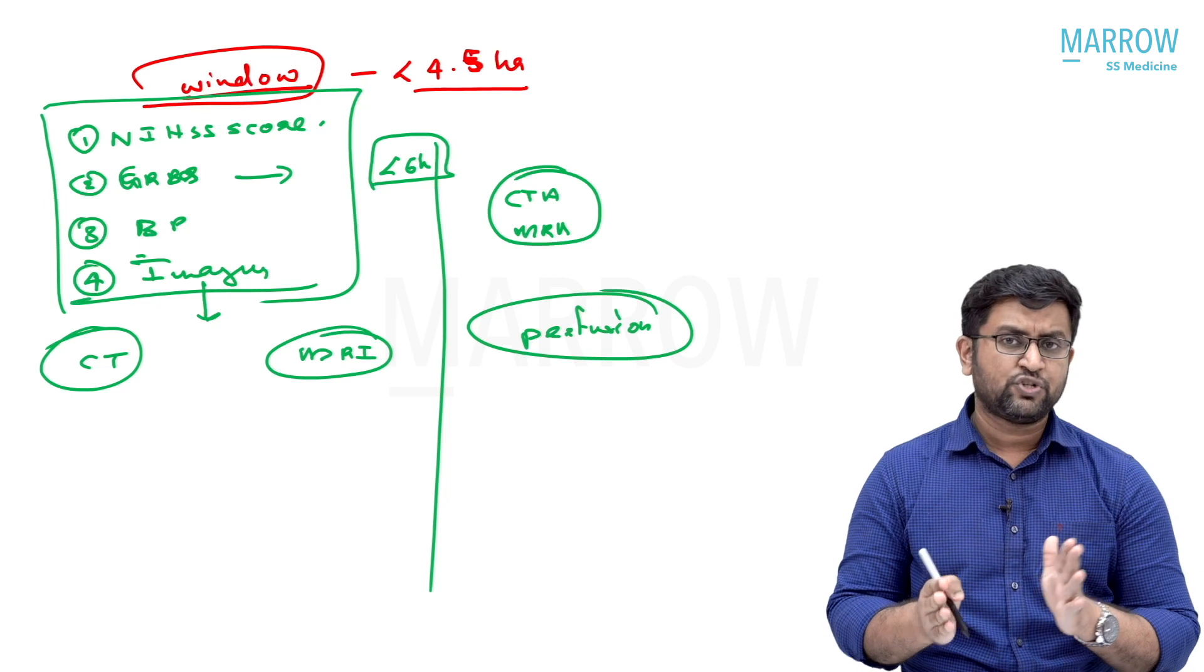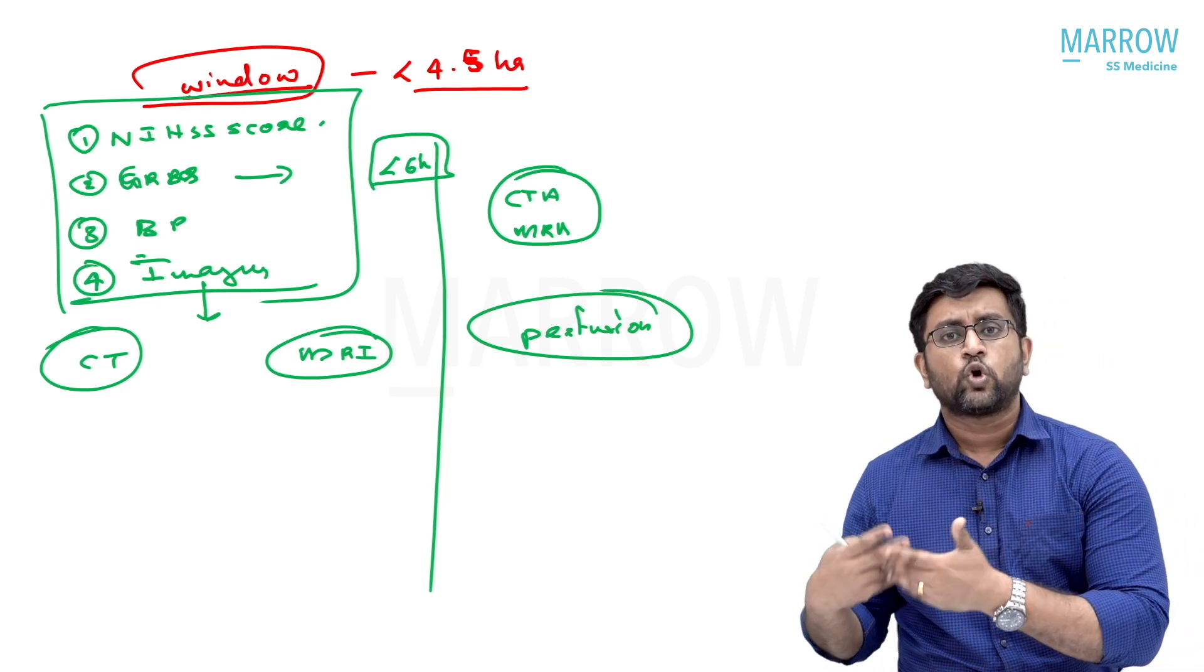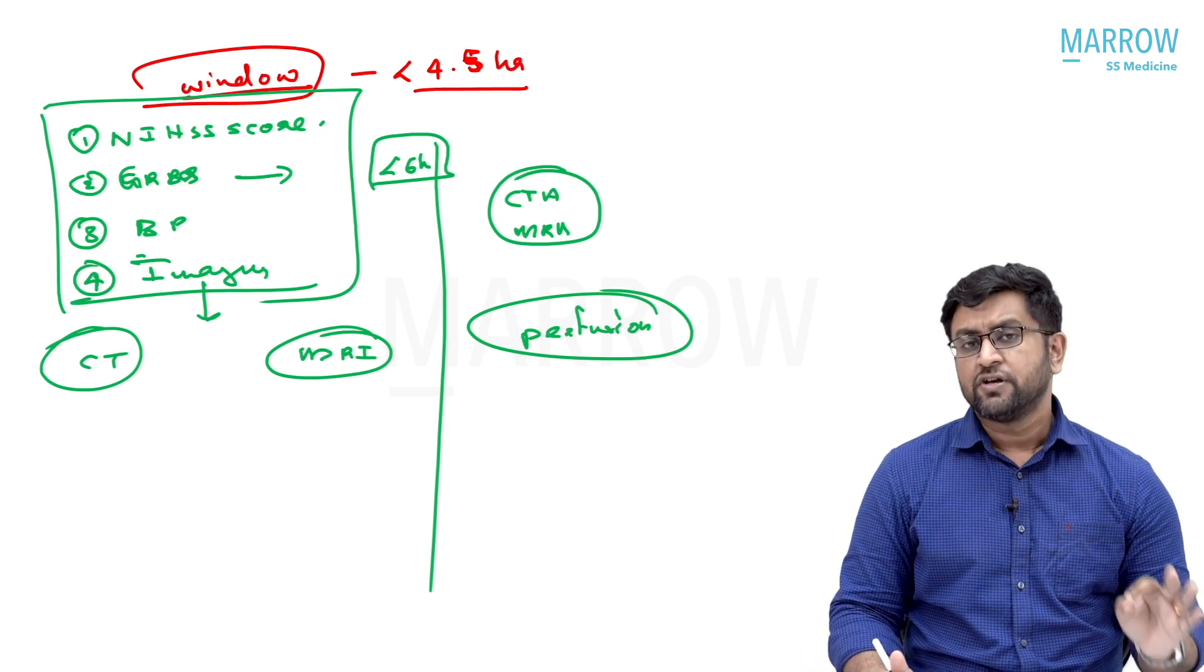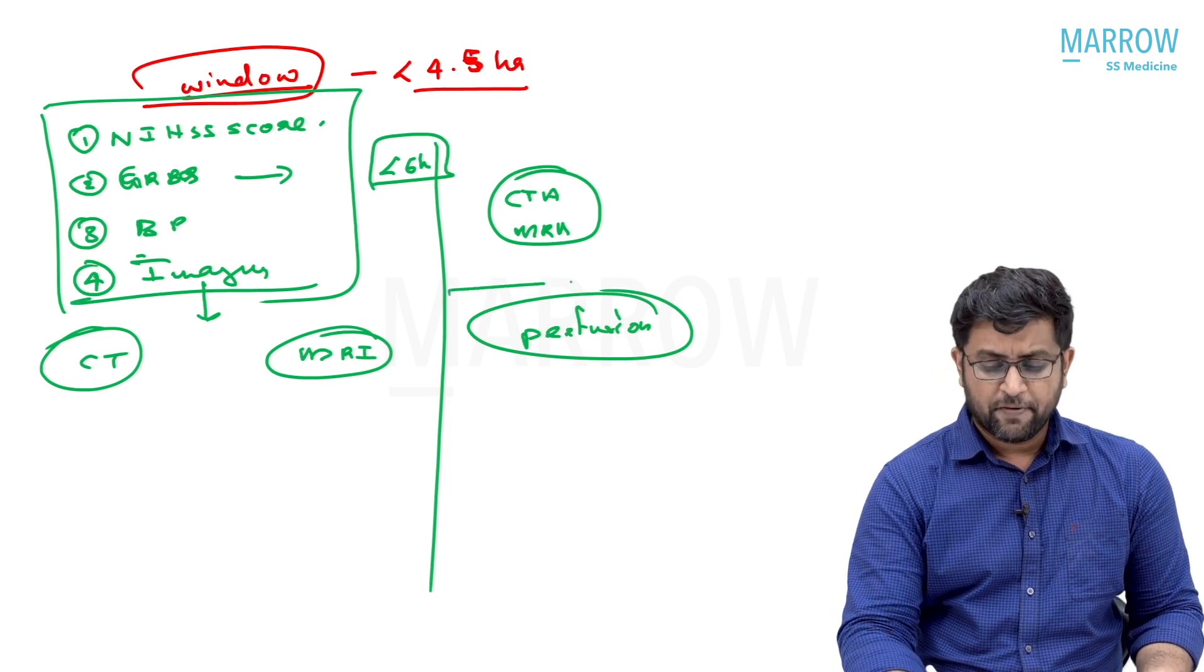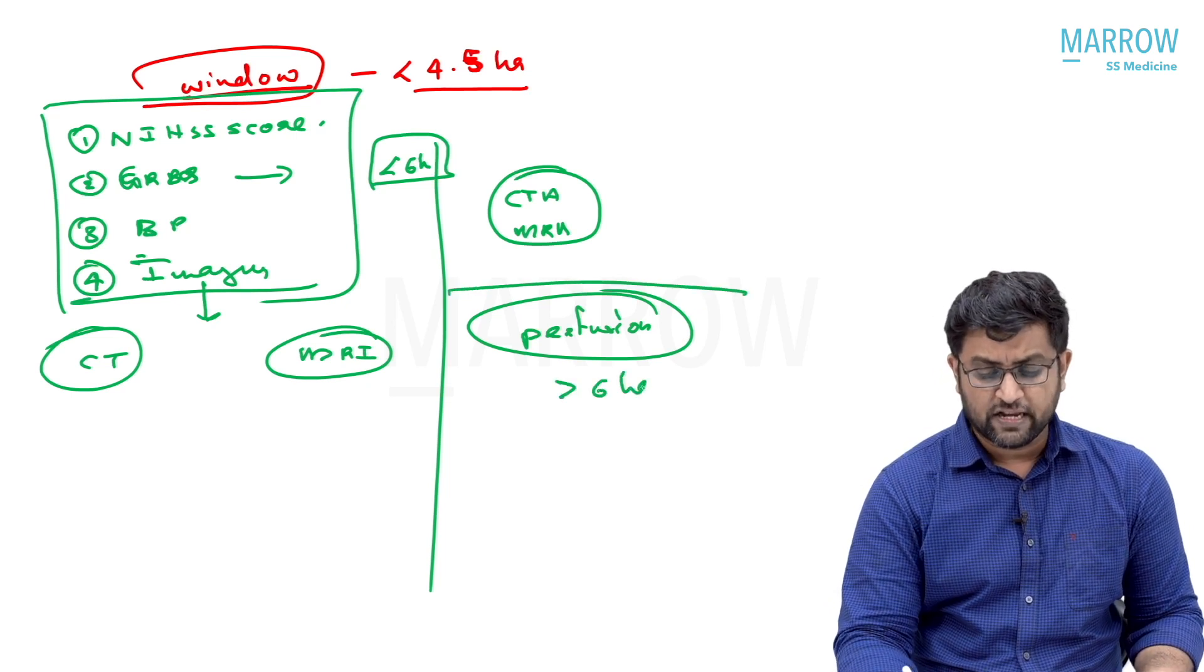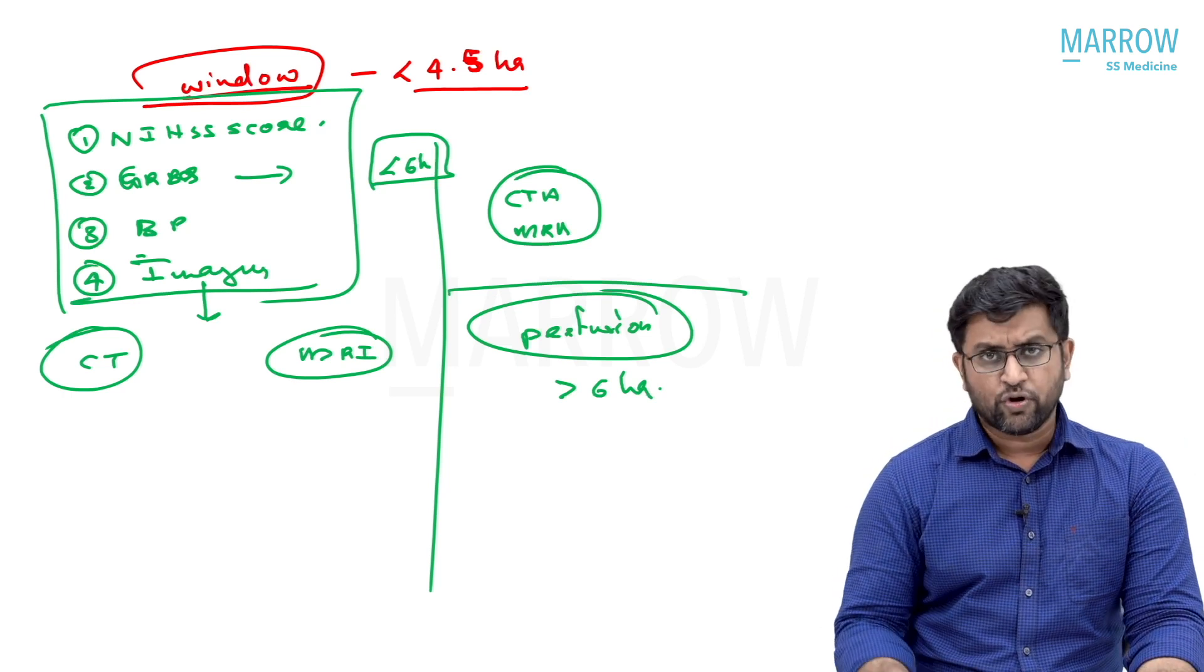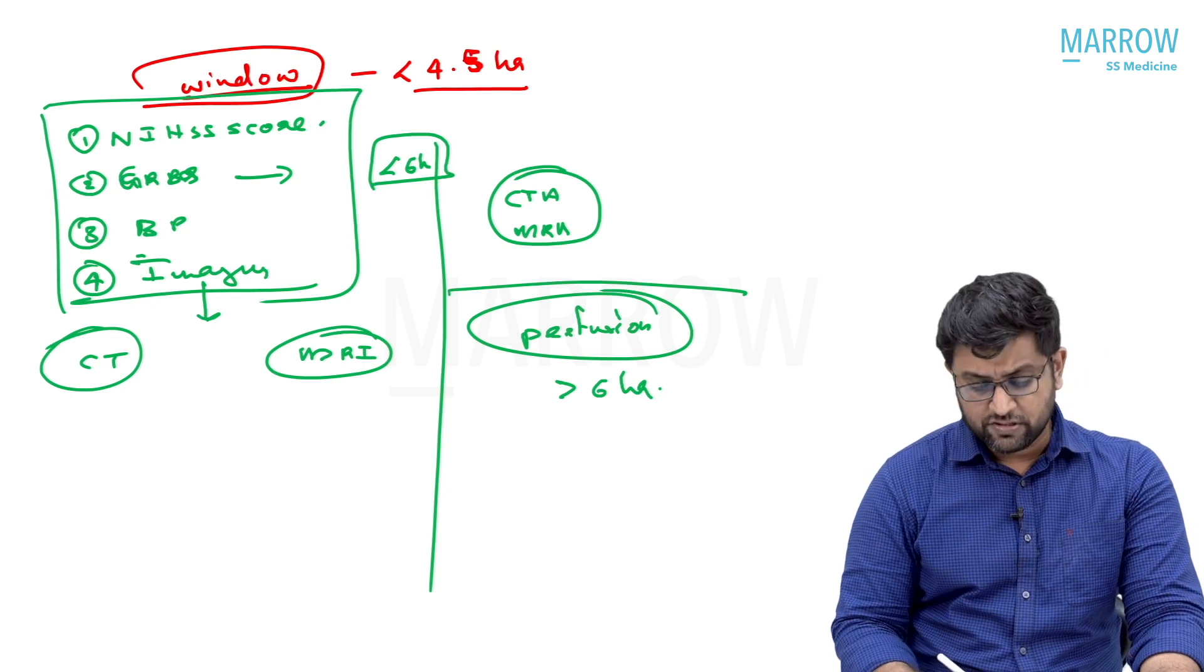After 4.5 hours, you are not lysing the patient, but you will take for thrombectomy intervention. At that time also, if the patient is within six hours, there is no need of any additional investigation like perfusion. Perfusion is needed if it is more than six hours or in certain special scenarios that is for a practicing neurologist.